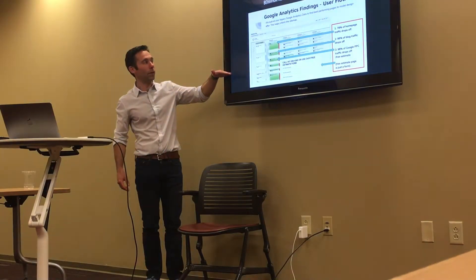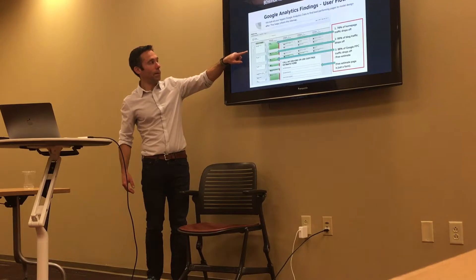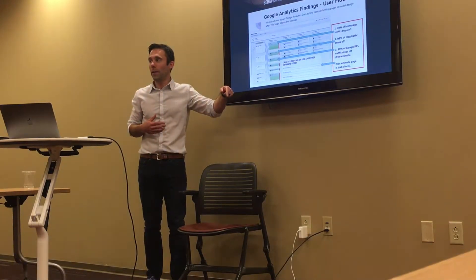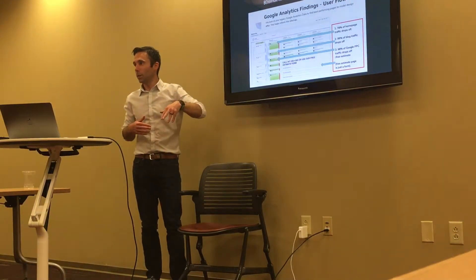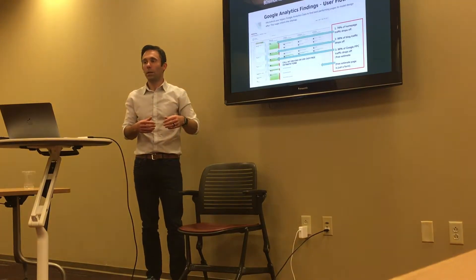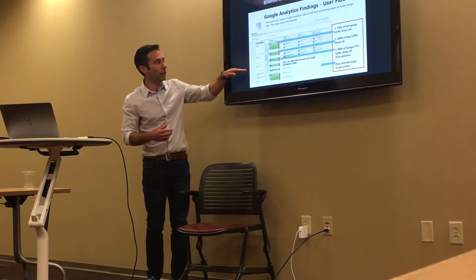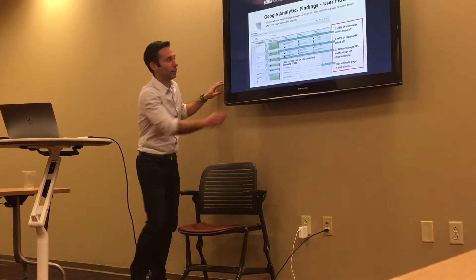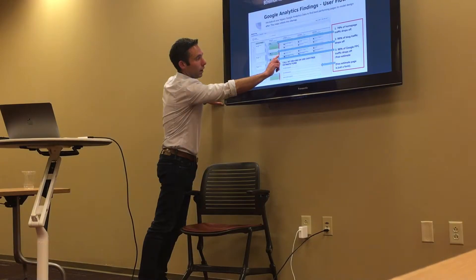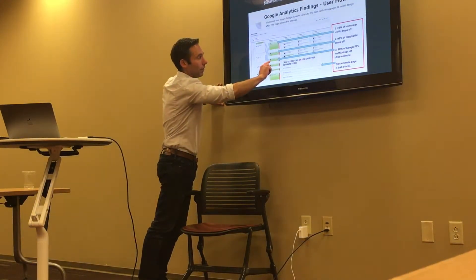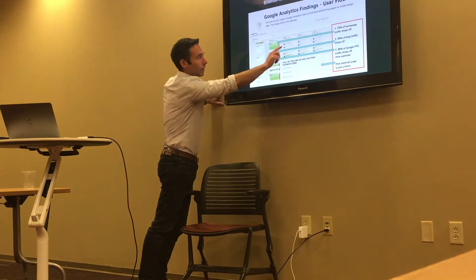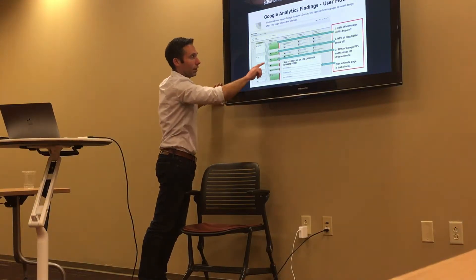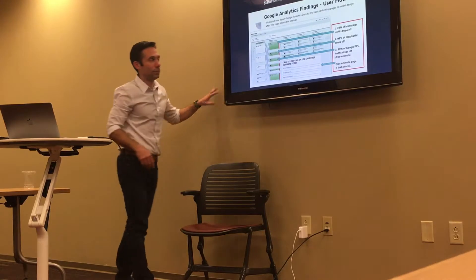I'll show you this — you can sort the behavior flow by different things such as source medium, which I explained earlier, whether it's Google cost per click or Facebook. You can see here that all the traffic from Google cost per click goes to the free estimate page. See this little thin line? About 2% of the 524 people actually continued on and clicked to the homepage, then dropped off. So really 100% nothing — the other 98% just immediately dropped off without filling out the form.